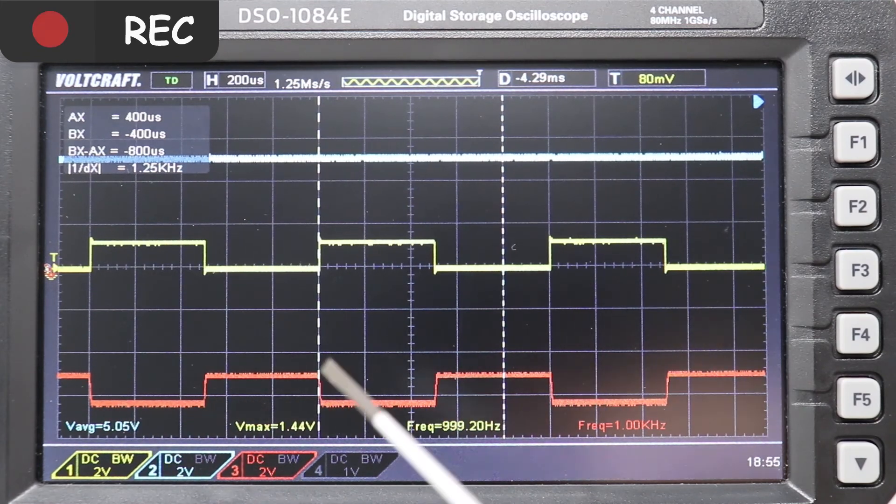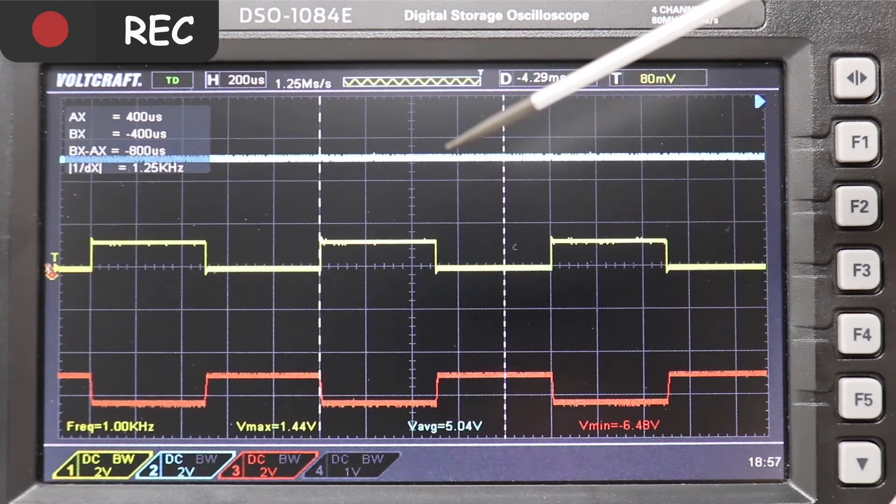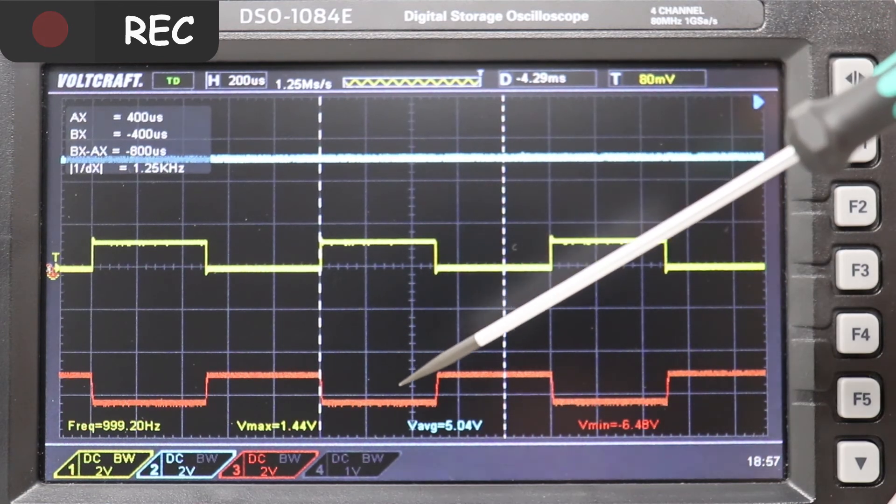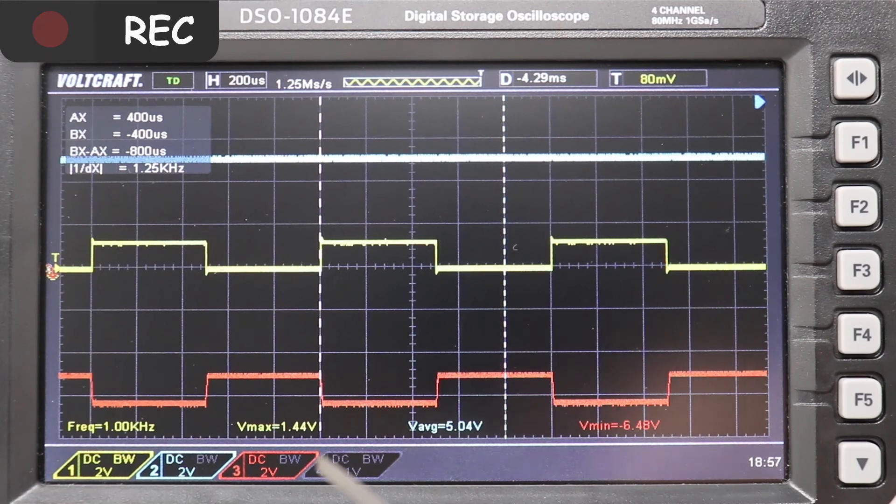We can clearly see that the output is a square wave too. If we add 5 volts to the amplitude of around 1.5 and invert it, we get minus 6.5 volts. That is the minimum voltage of our output signal.